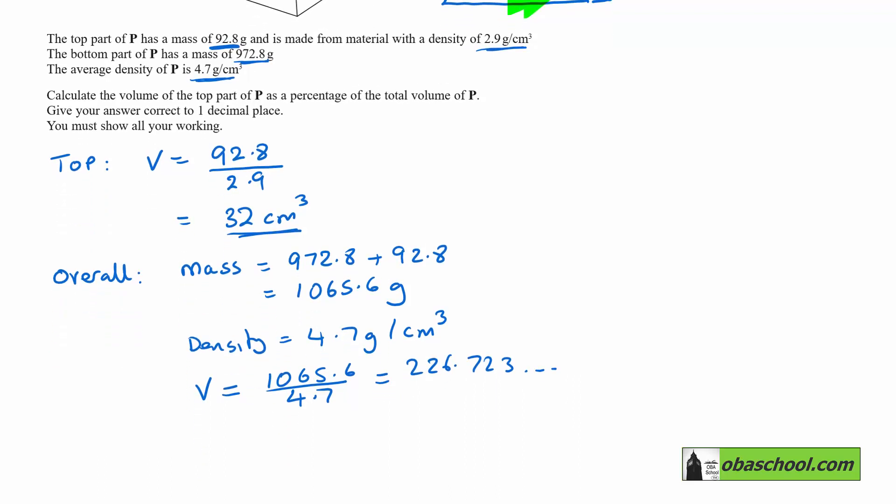Therefore, the percentage that the top is of the total volume, we know the top had a volume of 32. The overall is 226.723 and multiply that by 100 and it comes to 14.11%.